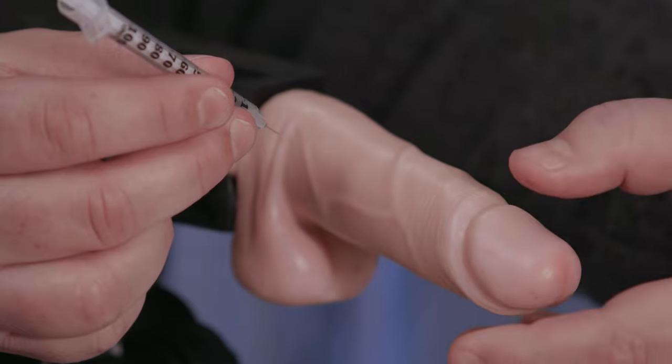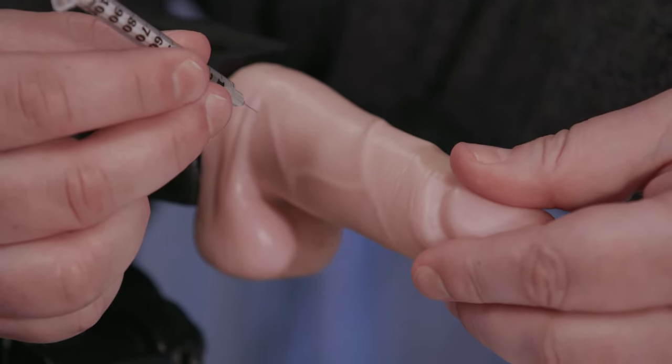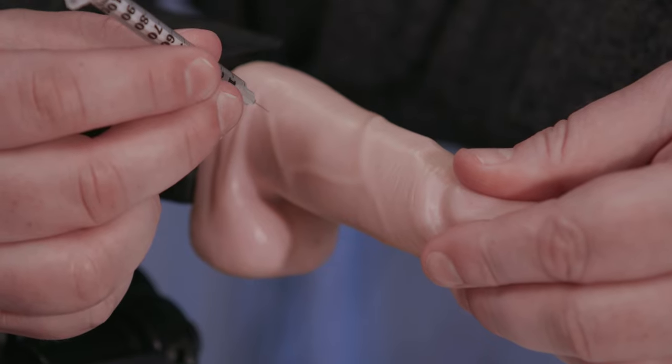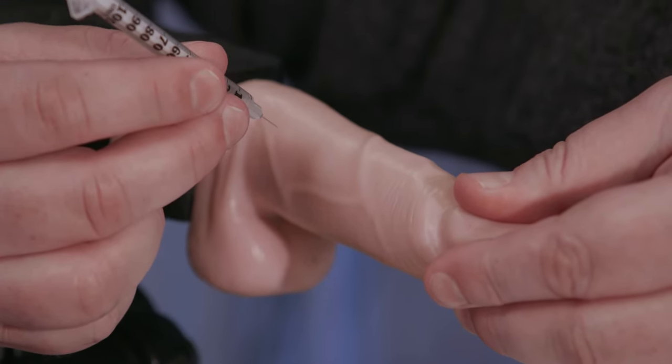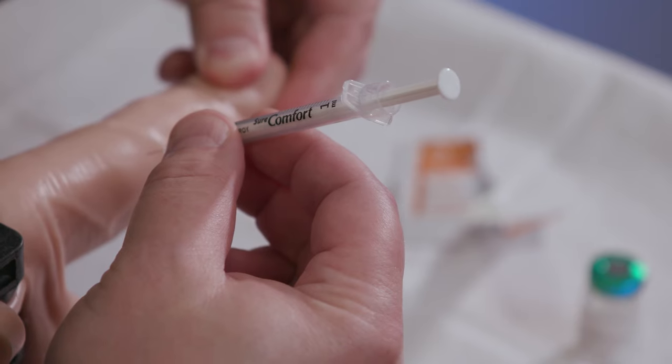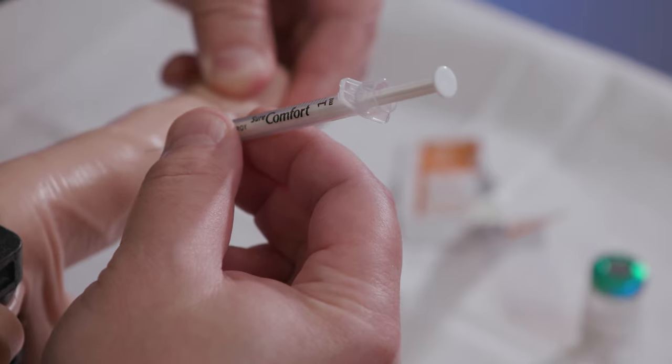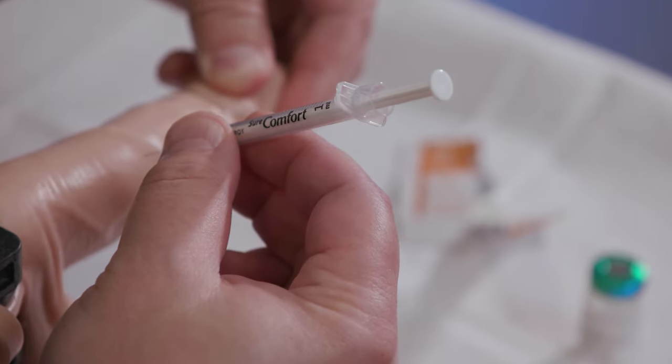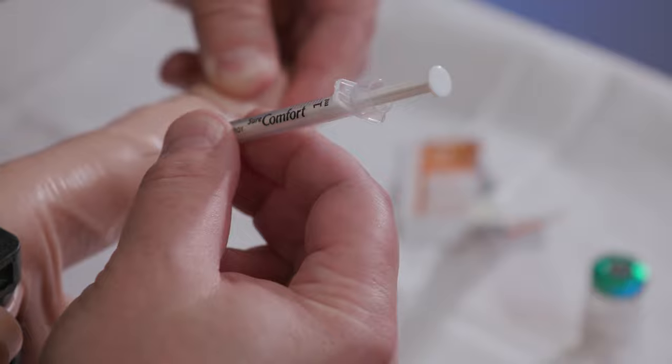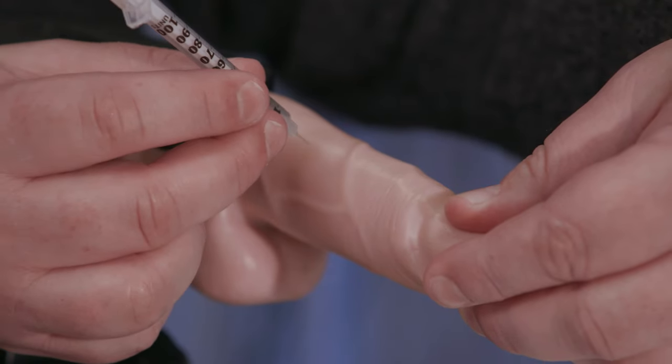If you have foreskin, pull it back. Once again, grasp the head of your penis and pull it straight out in front of you so it's fully stretched. This helps make sure the medication goes into the erectile tissue. Keep pulling on your penis from the time the needle goes into the shaft until it comes out. Don't twist it or you could inject into the wrong area.